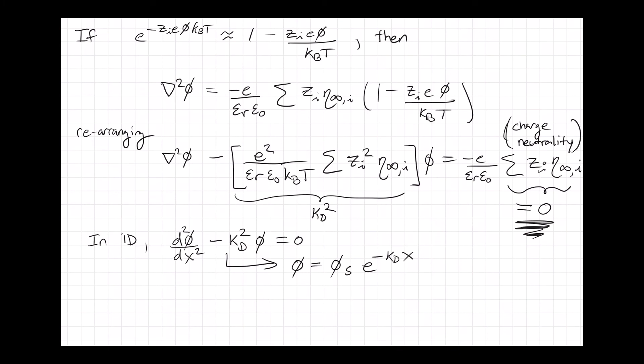Often this is written a little bit differently, so we'll write it as φ_s times e to the minus x over L_D. Now the quantity φ_s is called the zeta potential. We'll talk a little bit about the zeta potential in a little bit.